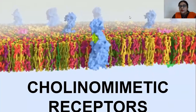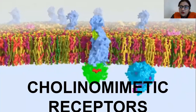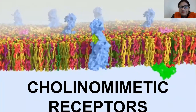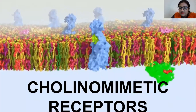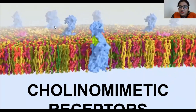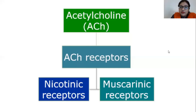Today we are going to talk about cholinomimetic drugs. The word 'mimic' means you are copying somebody, amplifying the action. When we talk about cholinomimetic receptors, these are receptors responsible for amplification of cholinergic transmission. Acetylcholine produces its action by binding with receptors.